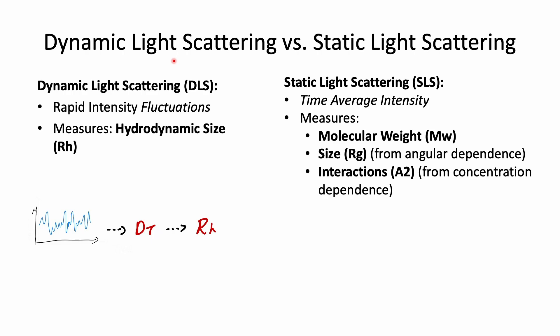There are two main types of light scattering techniques: dynamic light scattering and static light scattering. We have covered dynamic light scattering in another video — please check that out if you're interested. The focus of today's show is static light scattering. It is 'static' because, as opposed to dynamic light scattering, the SLS technique is interested in the time-average intensity of the scattered light. Instead of analyzing fluctuations, we measure the total scattered light at different angles and often at various sample concentrations.